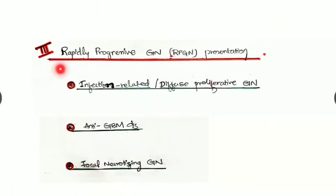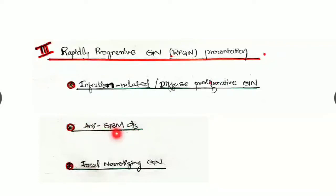The third is the rapidly progressive glomerulonephritic (RPGN) presentation, with three subtypes: infection-related or diffuse proliferative glomerulonephritis — including post-streptococcal glomerulonephritis (PSGN); anti-GBM (anti-glomerular basement membrane) disease; and focal necrotizing glomerulonephritis. This is the general classification from the Davidson textbook of medicine.